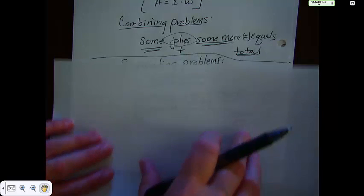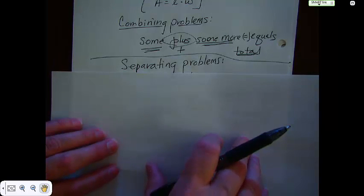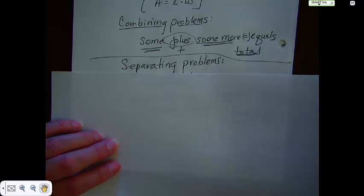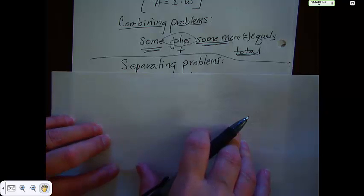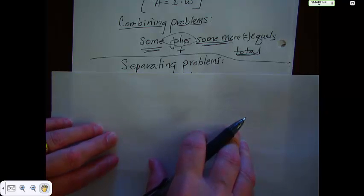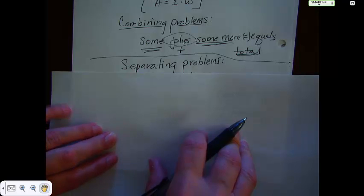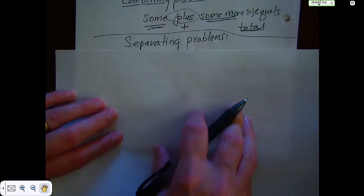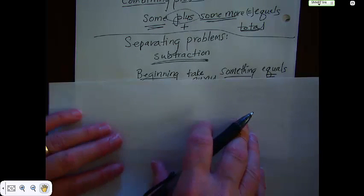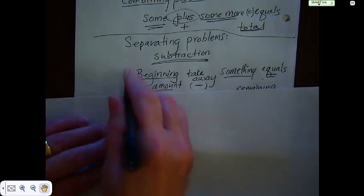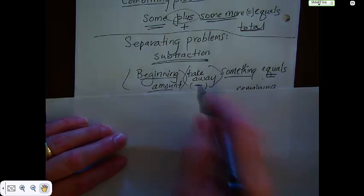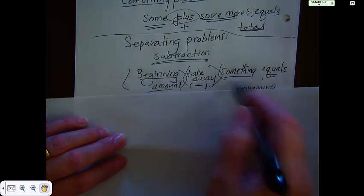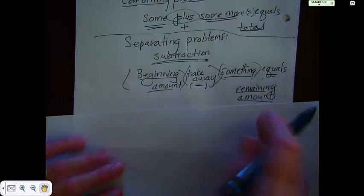There are also separating problems, and separating problems imply subtraction. So a separating problem might be, I had 16 cookies and my brother ate seven cookies. How many cookies do I have left? I would have nine cookies left. You have a beginning amount, you take away something (your subtraction sign), and it equals the remaining amount.